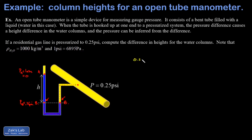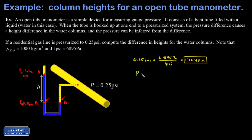Let's get started on the actual calculations. First, we need to convert 0.25 psi to pascals. There are 6,895 pascals in a psi, and doing that calculation I get 1,724 pascals. Then I'm going to use the formula for pressure at a depth in a fluid — that's the gauge pressure formula, which already assumes atmospheric pressure is treated as zero. In other words, we're looking for pressure relative to the atmosphere.